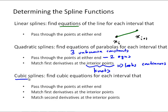For a cubic spline, we find cubic equations for each interval. Those cubic equations have four unknown constants. We get two equations by making sure the cubic passes through the points at either side of the interval, one more equation by matching the first derivatives at the knots, and another equation by matching the second derivatives at the knots. This gives us four equations for each interval for each of the four unknown constants — though there's a little twist we'll get to in a minute.